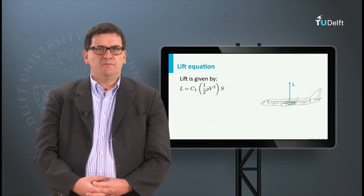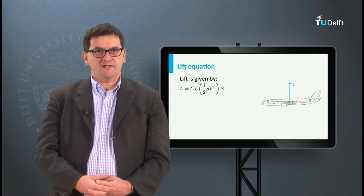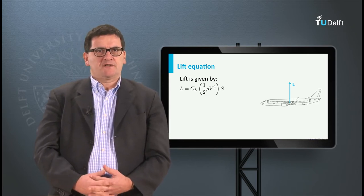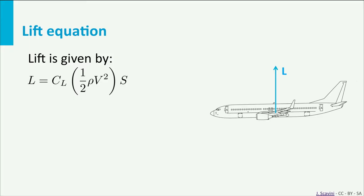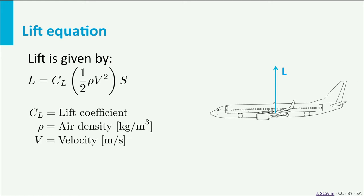The lift force is given by a rather simple equation. The lift is equal to a constant Cl times the product half rho v squared times S. The meaning of these parameters are as follows: Cl is the lift coefficient, which will be discussed in more detail on the next slides. The rho stands for air density, v for airspeed, and S is the wing area, which is the surface area projected on the x-y plane where z is the vertical direction.